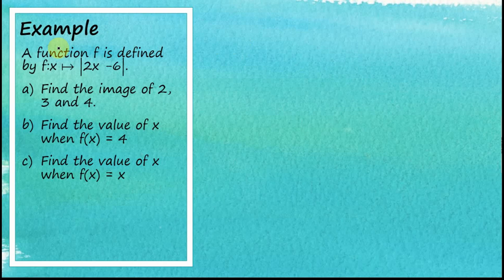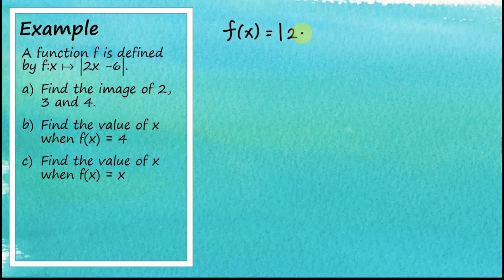Let's look at this example. A function f is defined by f(x) = |2x − 6|. For question (a), find the image of 2, 3, and 4.